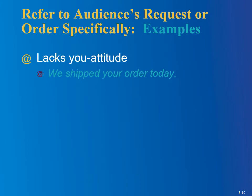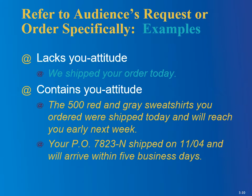Let's look at a specific example. One that lacks the you attitude: 'We shipped your order today.' Starting with 'we' is not a good sign, and 'order' is vague. Now the ones that have the you attitude: 'The 500 red and gray sweatshirts you ordered were shipped today and will reach you early next week.' Here we have a specific reference — 500 red and gray sweatshirts. For a bigger business: 'Your PO 7823N shipped on 11-4 and will arrive within five business days.' This puts a date rather than just 'today,' and clearly references the specific purchase order — you can see how one is specific and the other is vague.